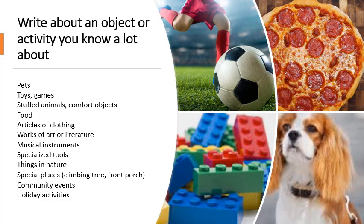The first thing you need to do is pick a topic. You're going to want to write about an object or activity you know a lot about, or care a lot about. There's a whole list of categories of things that would work well for this activity — read through it. It's certainly not exclusive; come up with your own.